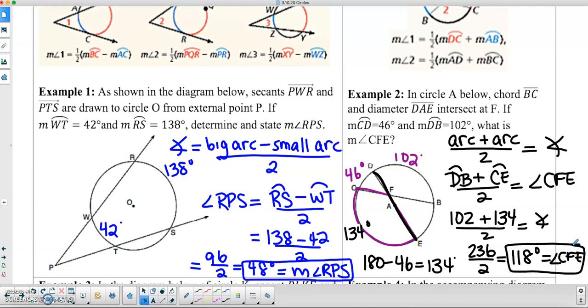So that is how we find interior and exterior angles that are formed by secants, tangents, and chords.